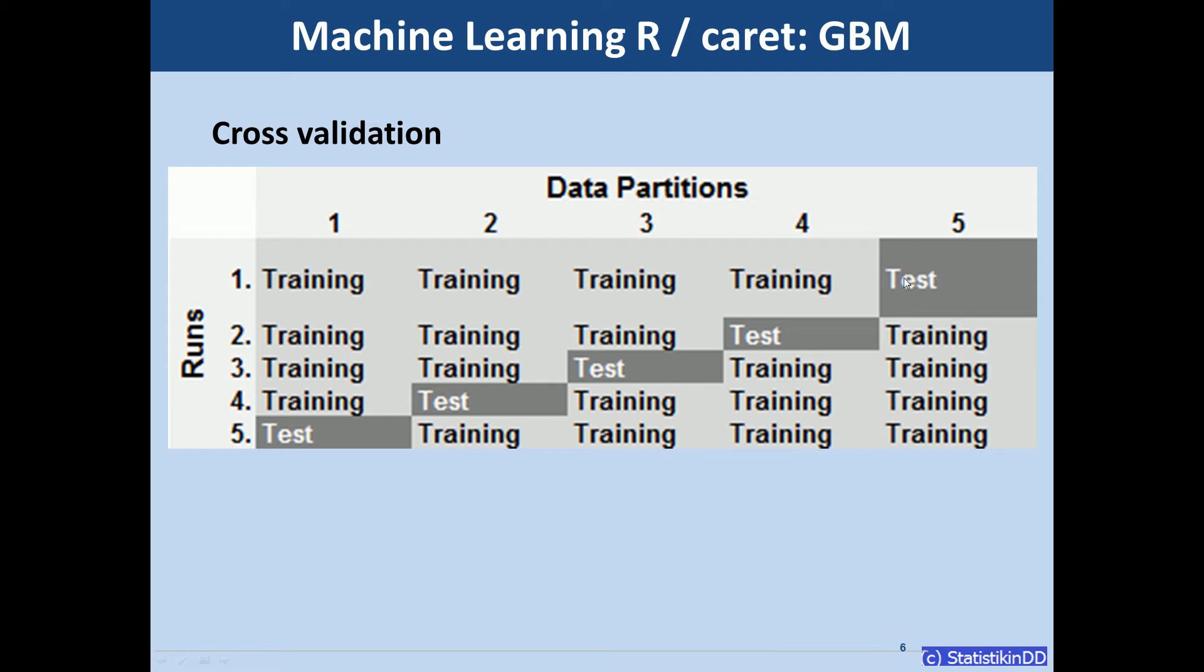And the fifth one is the test partition on which we evaluate model performance. And we repeat this five times so that each partition serves as test data once. And then this whole process can repeat again to get different divisions to have more stable results.